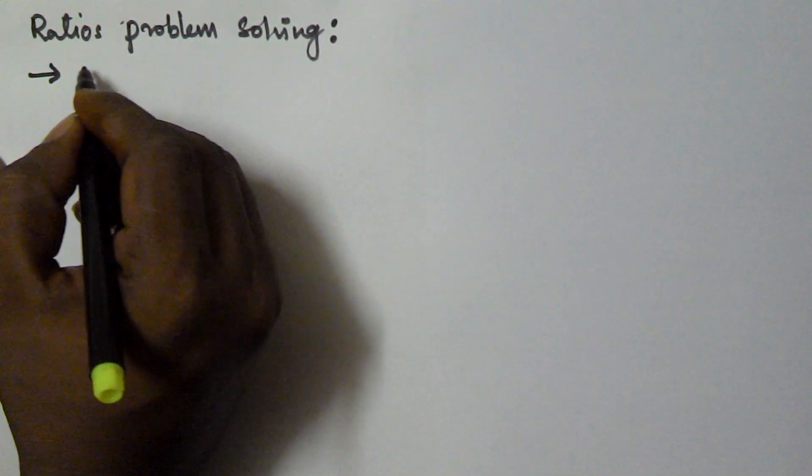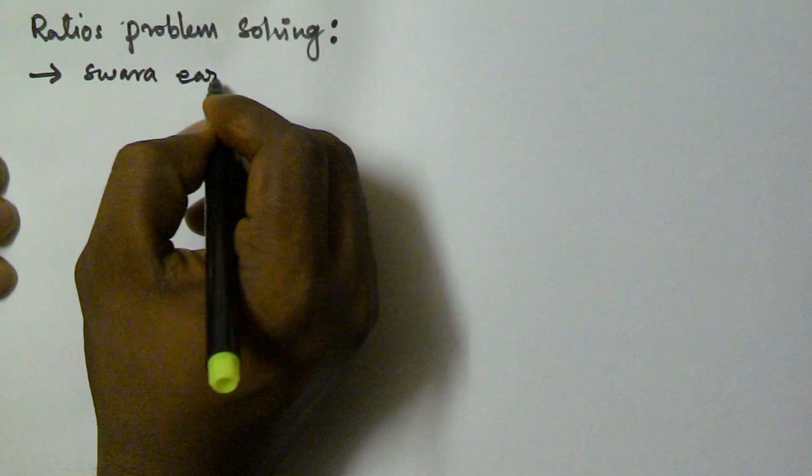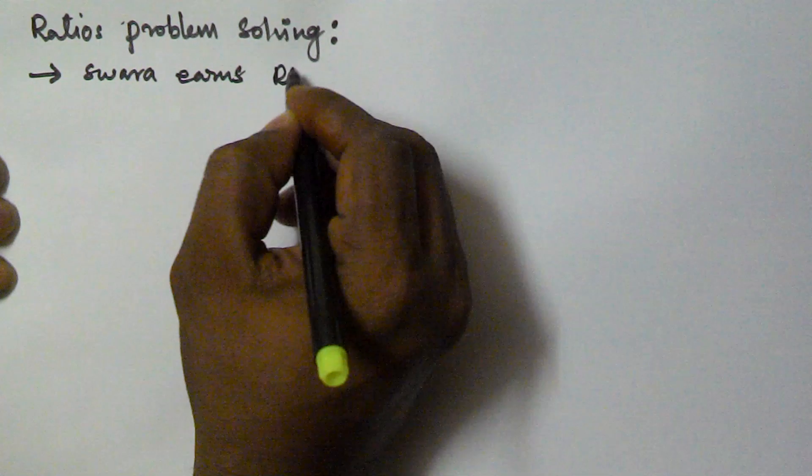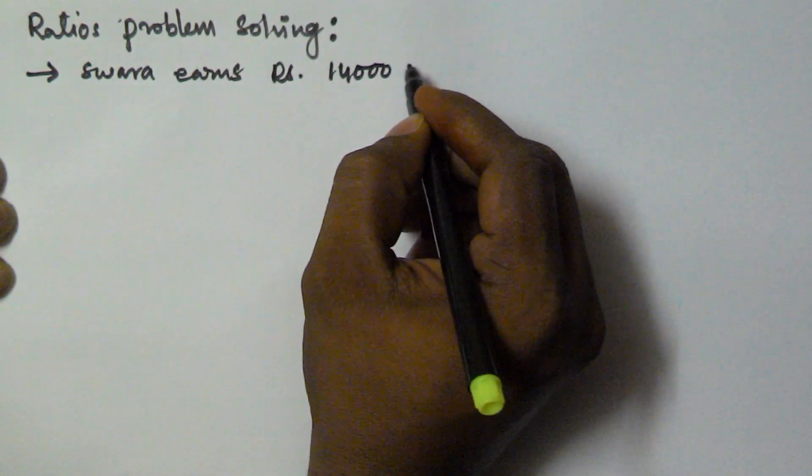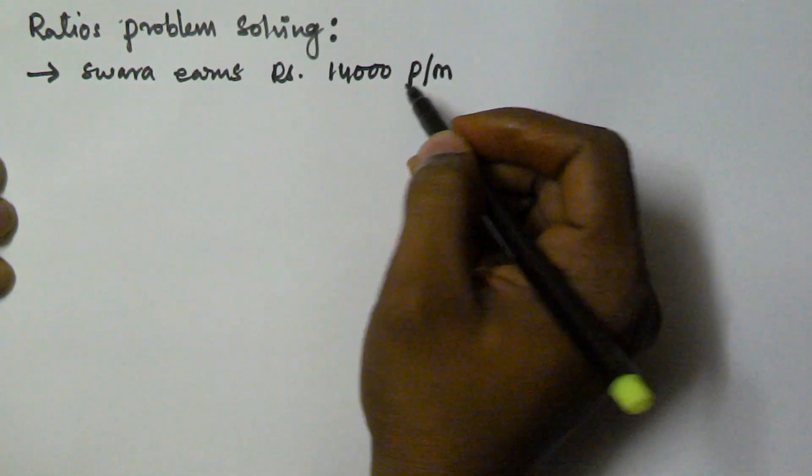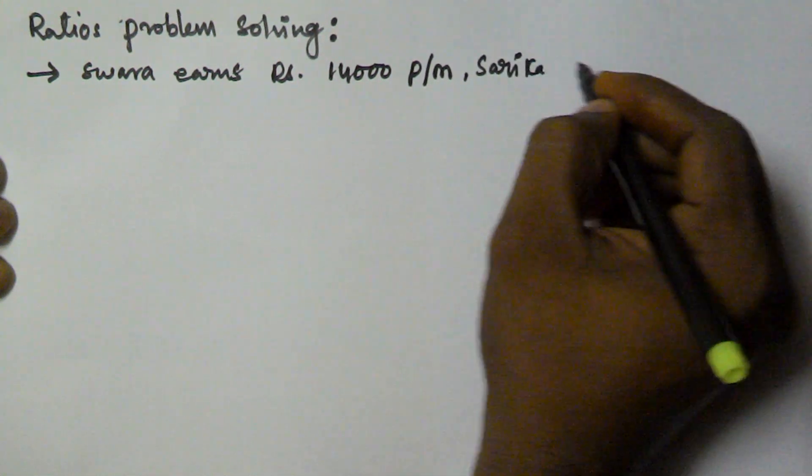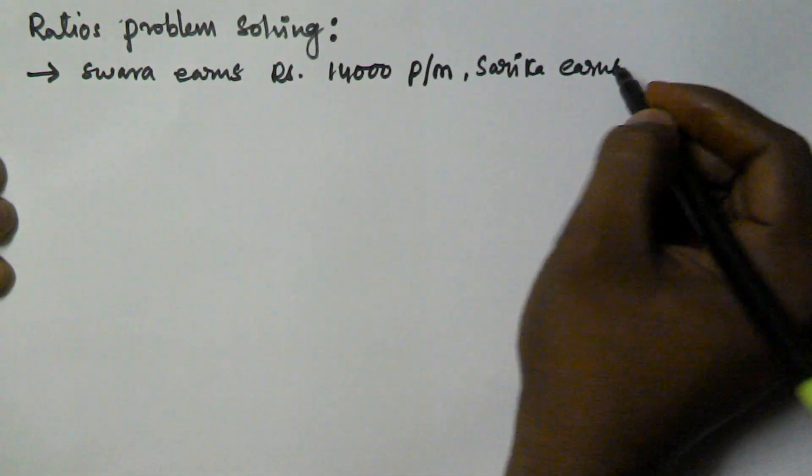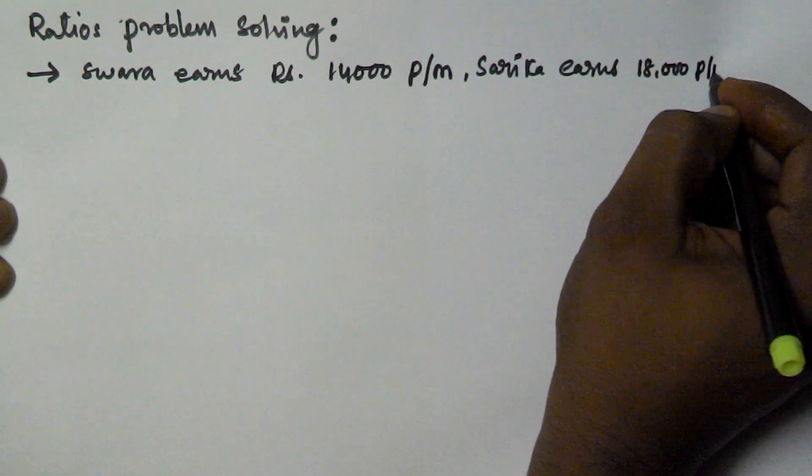So let us assume Swara earns Rs 14,000 per month, where Sarika earns Rs 18,000 per month.